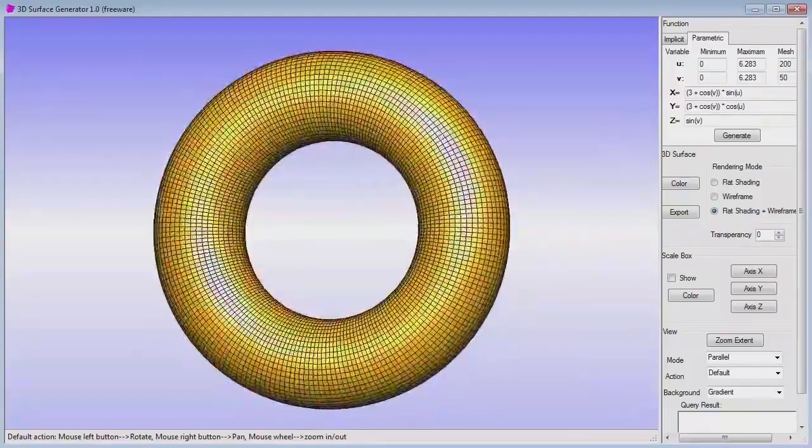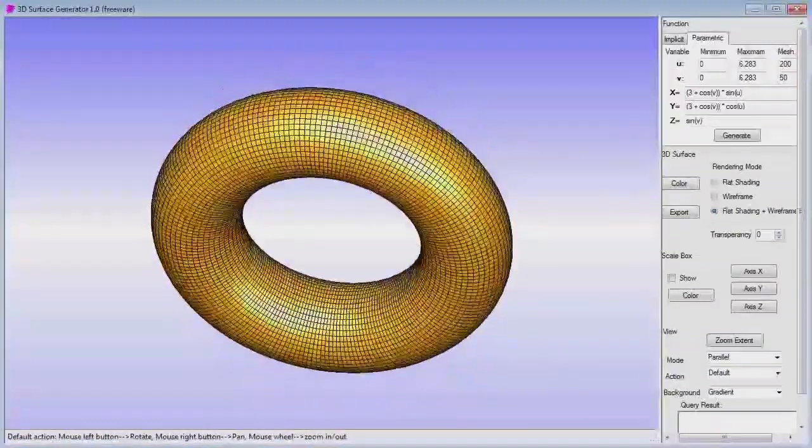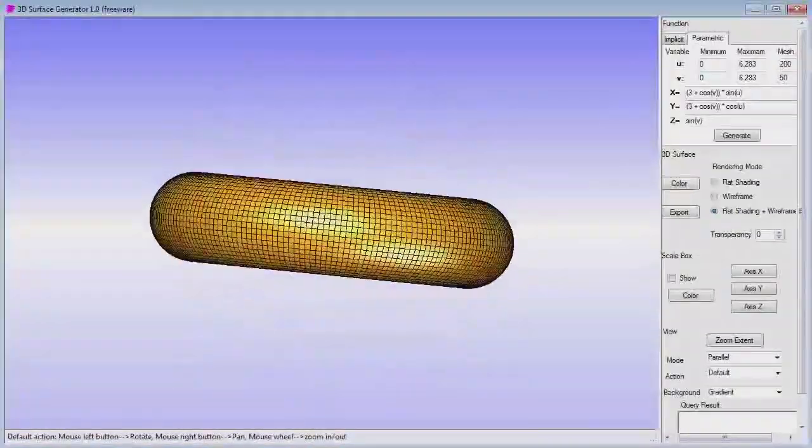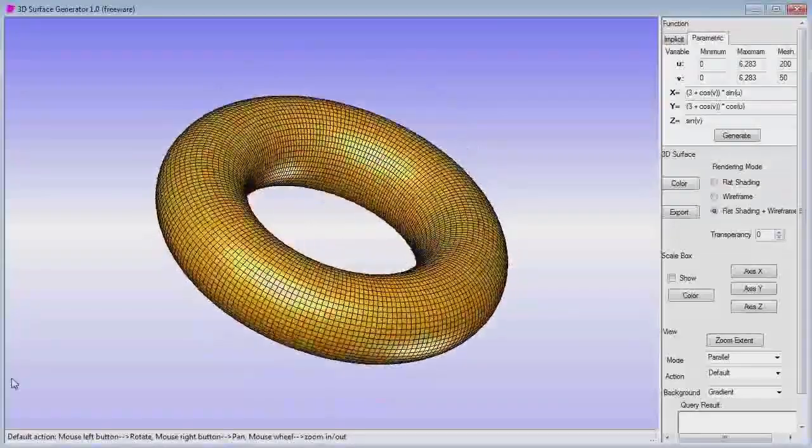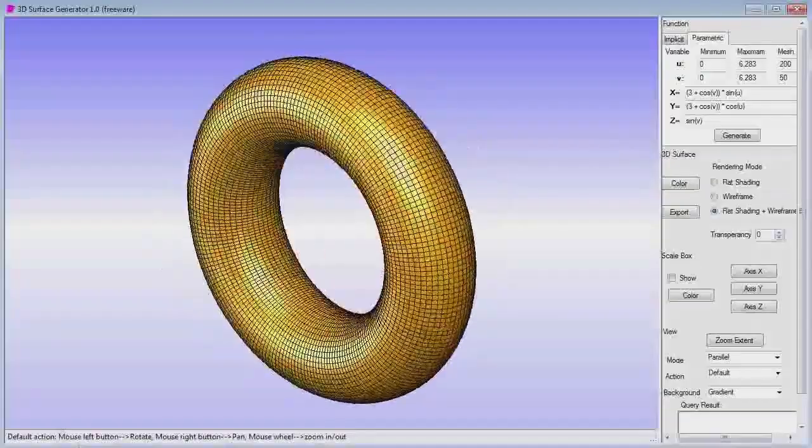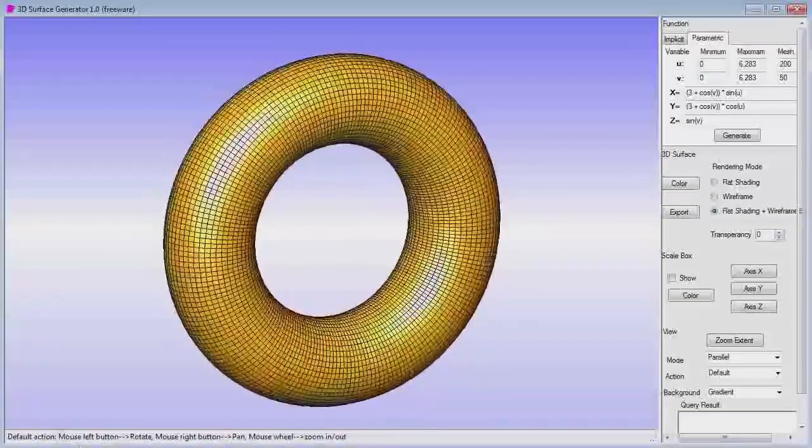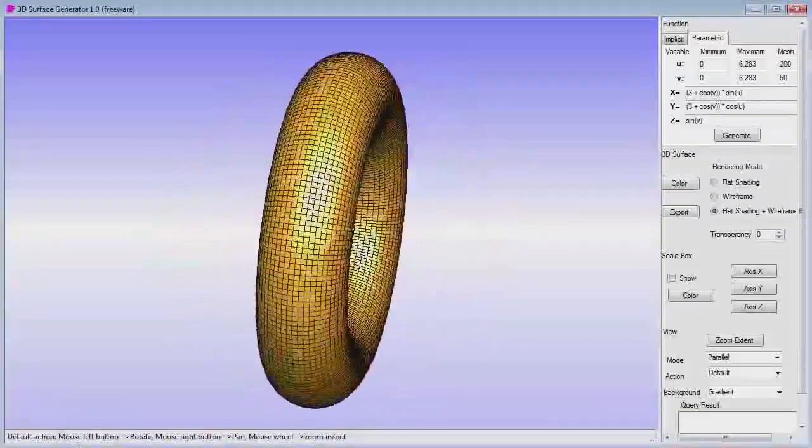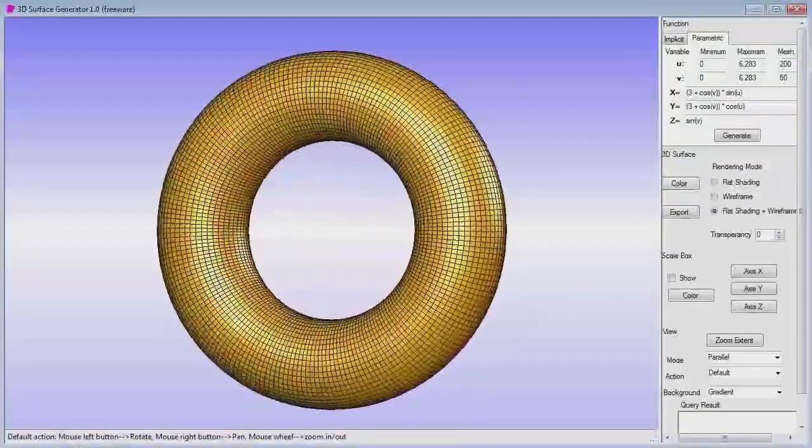Let's start with surfaces. Sometimes you have a parametric form for the surface bounding the object you want to make. For example, to make this solid torus, we describe the torus surface. In this 3D surface generator program, we can create a torus by giving parametric equations for x, y, and z.